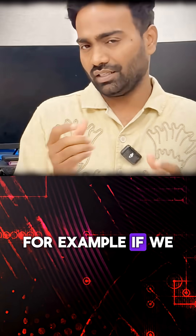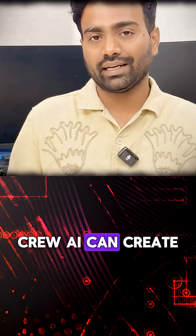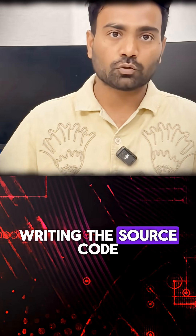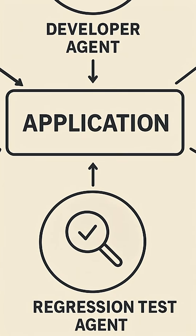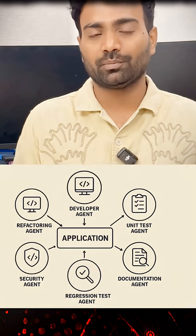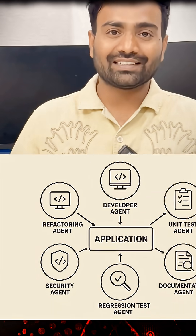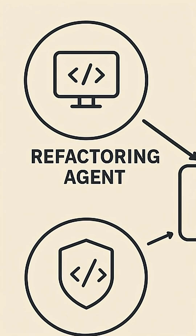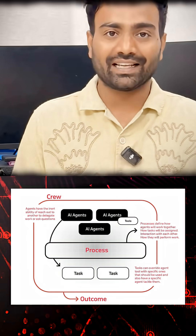For example, if we take the same writing an application, Crew AI can create a developer agent responsible for writing the source code, a unit test agent for writing unit tests, a regression test agent for regression test cases, a documentation agent for writing documentation, a security agent, and a refactoring agent. So you can define multiple AI agents as part of an agentic AI framework.